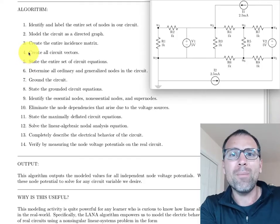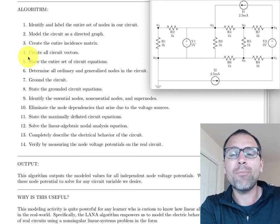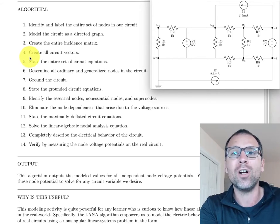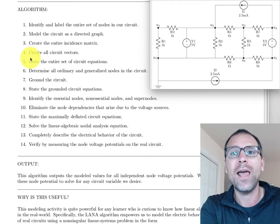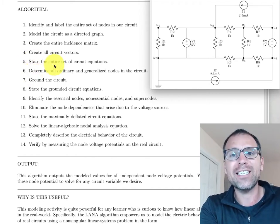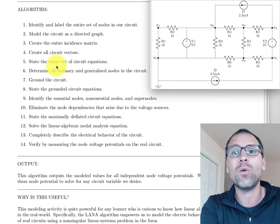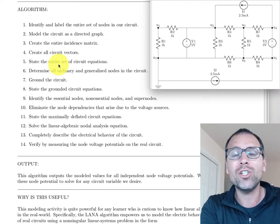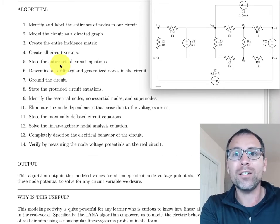In step four we stated three separate vectors: the voltage drop vector, the current vector, and the node voltage potential vector, which combined had a total of 31 variables in this case. Then in step five we used them to state circuit equations based on three types of equations: node potential KVLs, branch constitutive relationships (in this case Ohm's law), and Kirchhoff's current laws. Those were a lot of equations in a lot of unknowns.